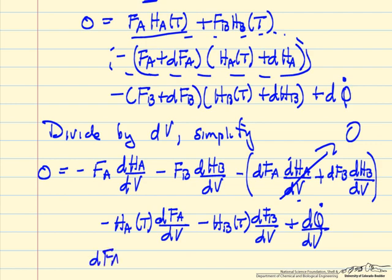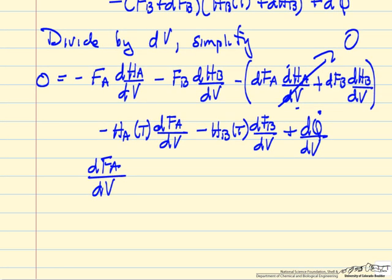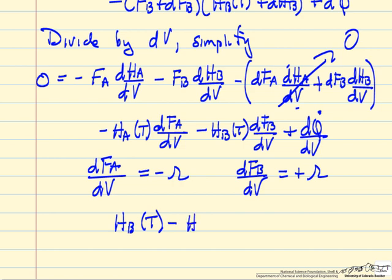We're going to now simplify it a couple other ways. One, we see we have the change in flow rate of A with respect to volume, which is from our mass balance minus R, where, for example, R might be KCA for first order reaction, and the derivative of the flow rate of B with respect to volume is plus R, because we're forming product, and the enthalpy of B at a temperature minus the enthalpy of A at the same temperature, that's the heat of reaction at that temperature.